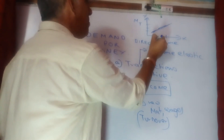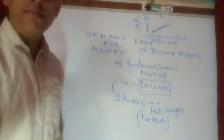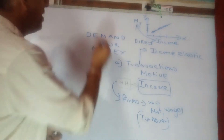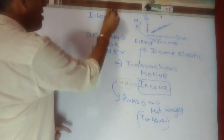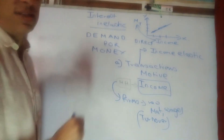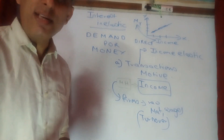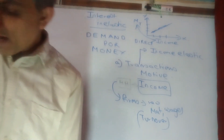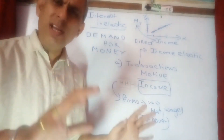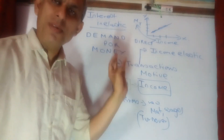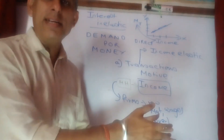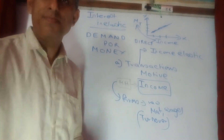Just as a final point, remember it is interest inelastic — meaning it is not affected by the rate of interest. This demand is affected only by income. This is our first motive for demand for money as Keynes suggested — the transactions motive. Just remember: it can come from households or from firms. Higher the income, higher the money demanded for meeting day-to-day requirements.